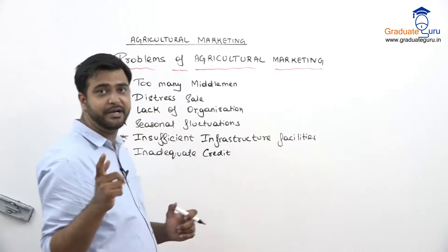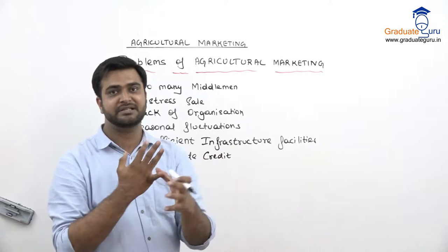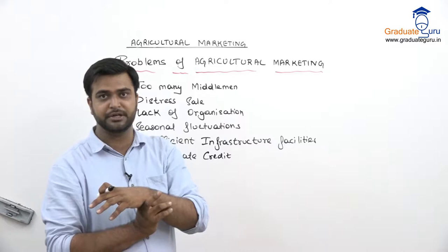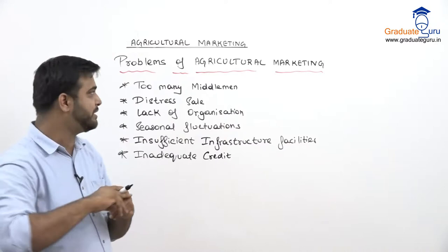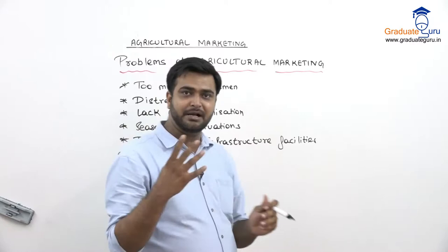The next step is problems of agricultural marketing. We did the essentials of a good market — what is needed to create a good market: no distress sale, storage facility, transport facility, proper communication. Now what are the problems in agricultural marketing? Why is proper marketing and distribution not happening? Why are farmers not getting proper prices? First: too many middlemen.